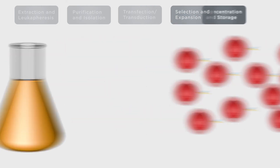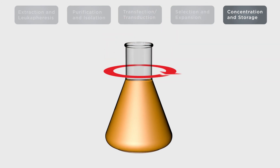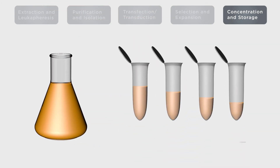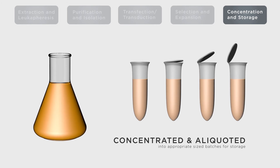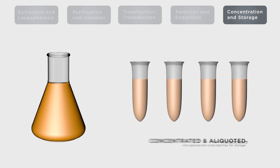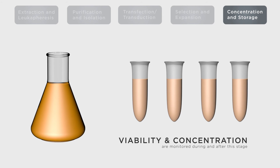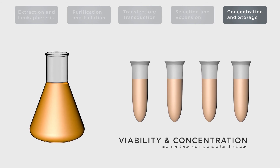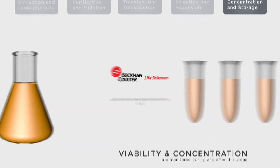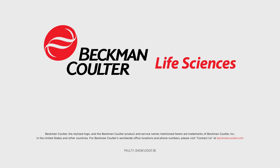Finally, after the desired number of T cells has been achieved, the cells are concentrated, aliquoted into appropriate sized batches, and placed into storage. Cell viability and concentration are monitored during and after this stage. To learn more about CAR T cell production, please visit www.beckman.com/resources.